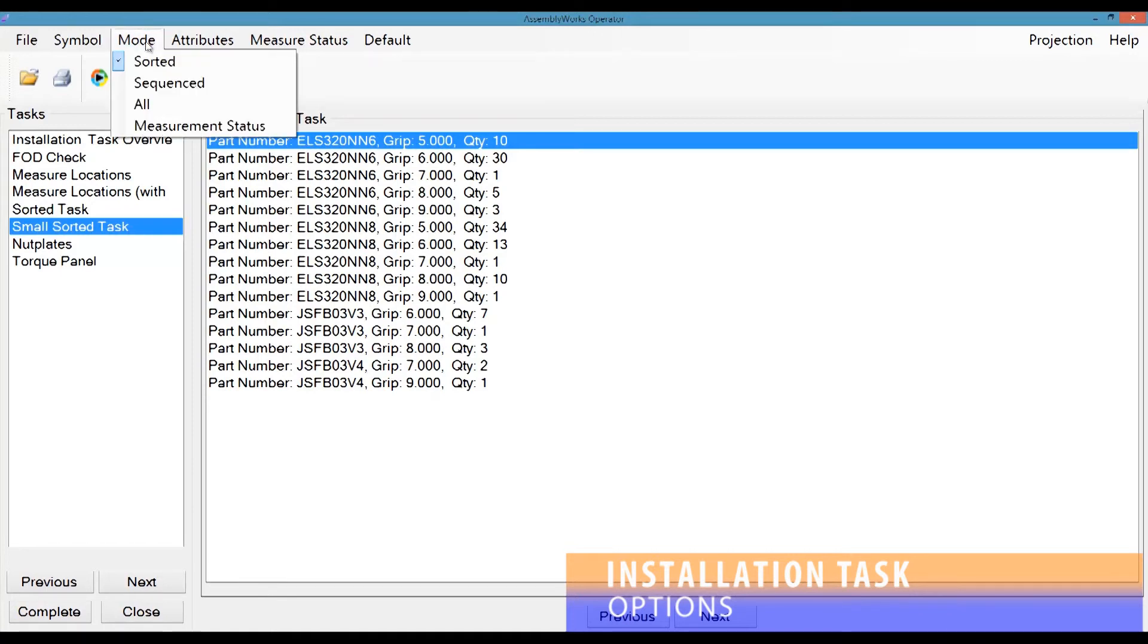The user may also change the mode. There are three modes: show all, sorted, and sequenced.